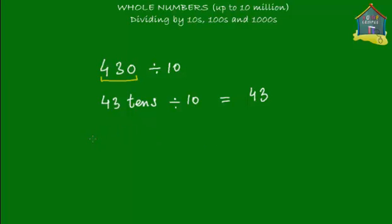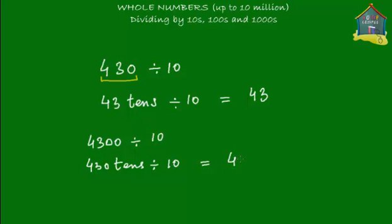Now consider this: say you are given 4300 and you have to divide by 10. How will you divide that? Well, 4300 has got 430 tens. If you go back to your place value lesson, you'll recall that 4300 has got 430 tens. So there are 430 tens in 4300 and you want to divide by 10 — the tens and tens get cancelled out. So the result is 430.